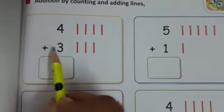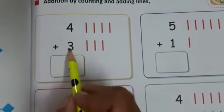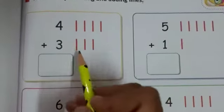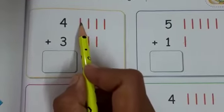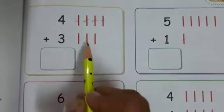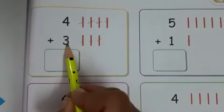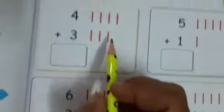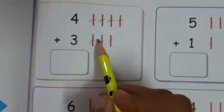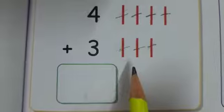This is number 4, and this is the plus sign. This is number 3. Four plus three is equal to how many? There are so many lines — count them: one, two, three, four. How many? Four. And the other side: one, two, three.